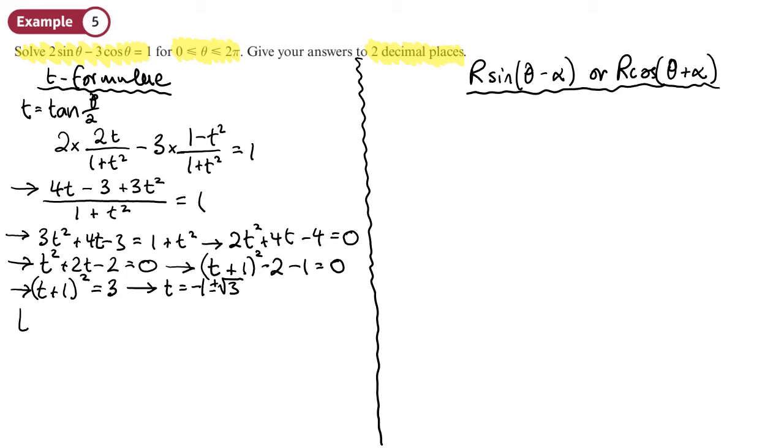So this is what tan theta over 2 equals, it equals negative 1 plus or minus root 3. So now I'll use my calculator to find the principal solutions by doing the tan inverse of negative 1 plus root 3 and negative 1 minus root 3. The tan inverse of negative 1 plus root 3, now remember this is in radians, so 0.6319. And then my other principal solution, if I change the plus root 3 to minus root 3, I end up with minus 1.2199.